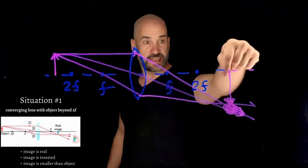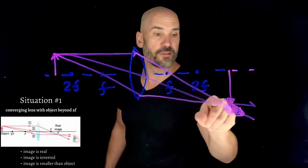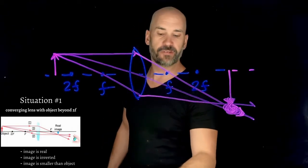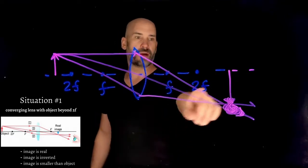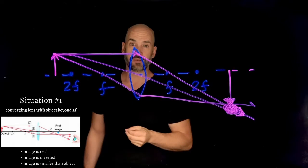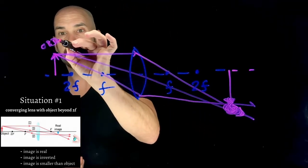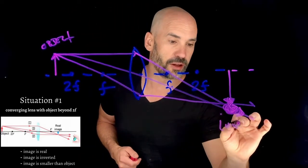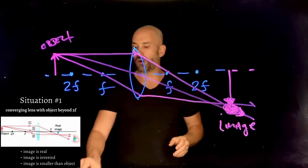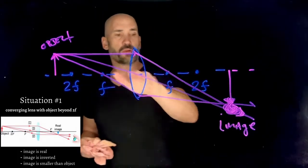You get an image here. This image is inverted — upside down. Because actual light rays are forming it, it's going to be a real image. And it's going to be smaller than the original object. So we've reduced the size of it. That's situation number one.